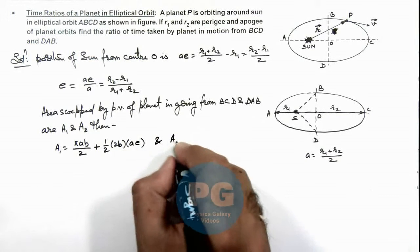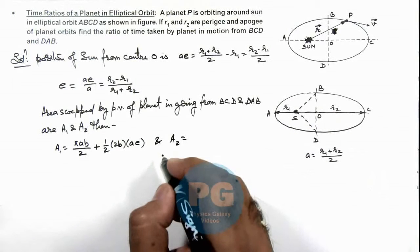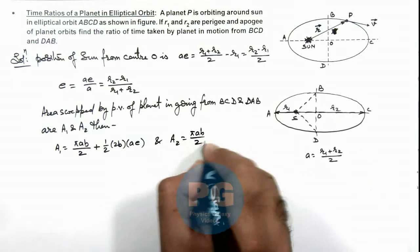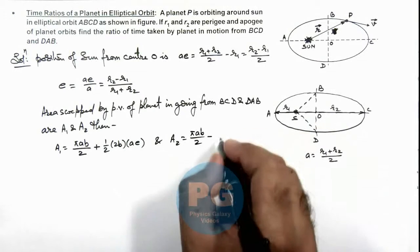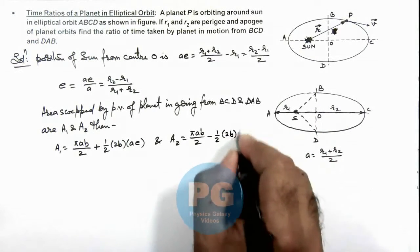And similarly, here A2, which is the area of DAB which is swept by the planet, can be written as πab by 2 minus half area, half of 2b multiplied by ae, that is the area of this triangle.